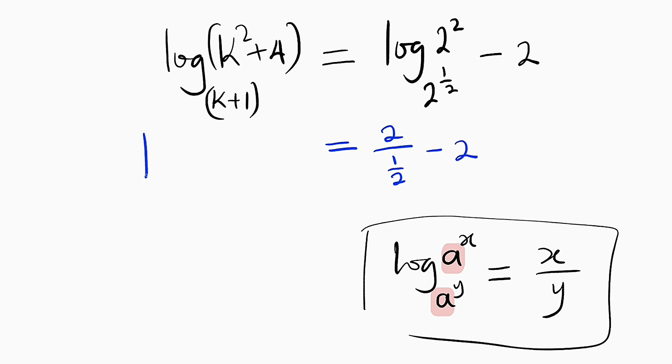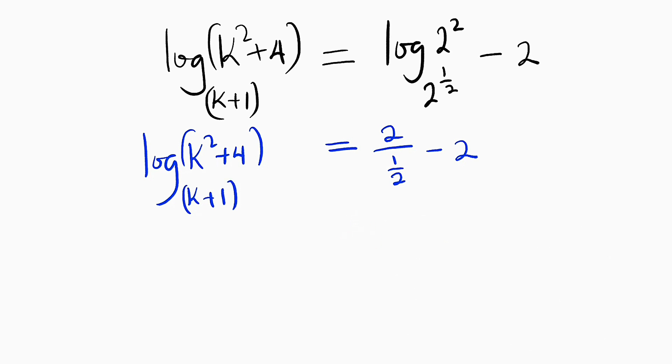The left hand side remains the same: log of k squared plus 4 with the base of k plus 1. The right hand side, we have 2 divided by 1 over 2 is the same thing as 4. So we have 4 minus 2.